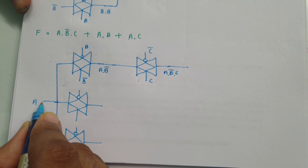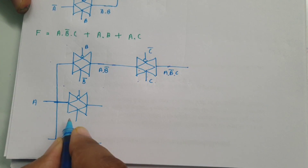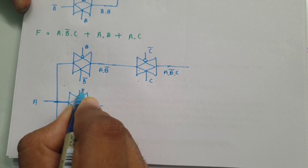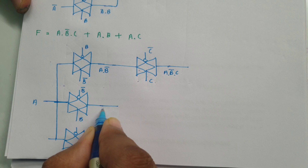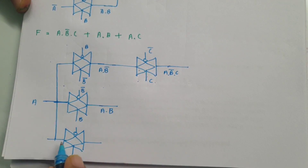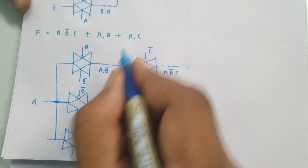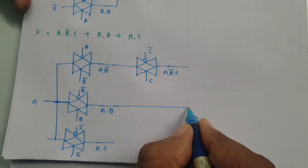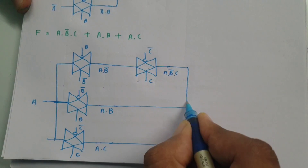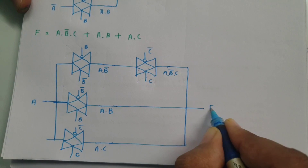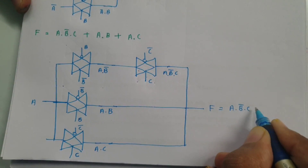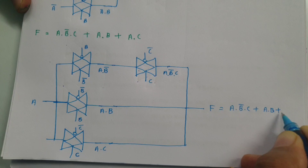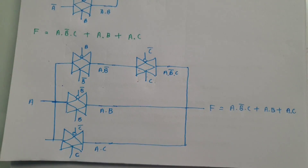For the second transmission gate, input a is provided, and if the control is b, then the bubble terminal should be b̄; this gives a·b. For the third transmission gate, input a is there, and if the control is c, then the bubble terminal should be c̄; this gives a·c. Connecting all three output lines together, the function f = a·b̄·c + a·b + a·c is formed.